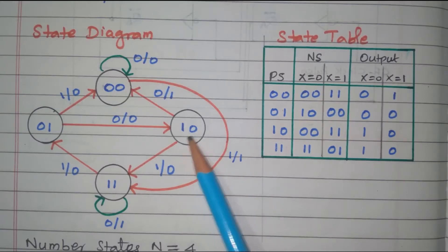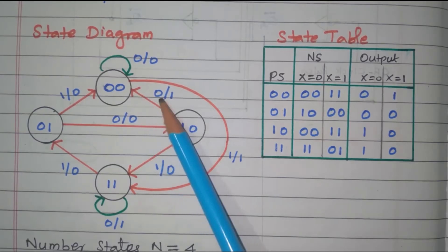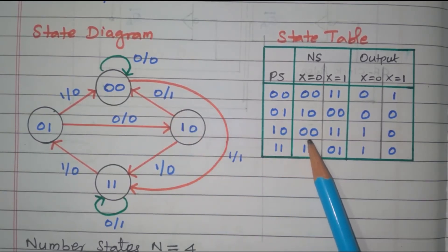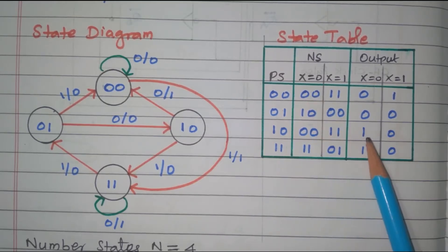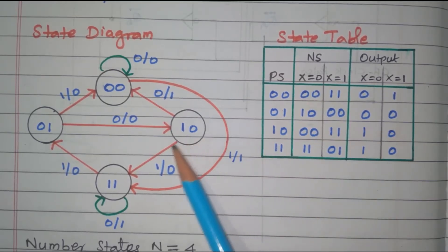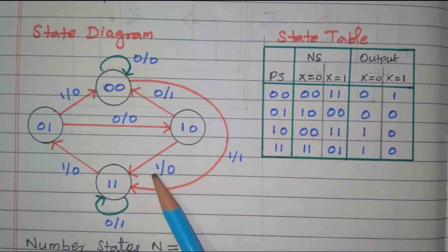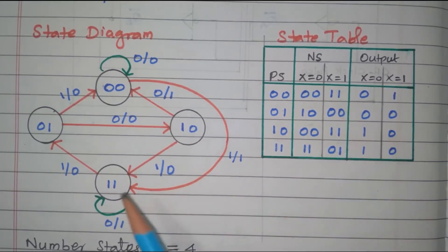Next we take state 10: it goes to 00 with input=0, output=1. And 10 goes to 11 with input=1, output=0.